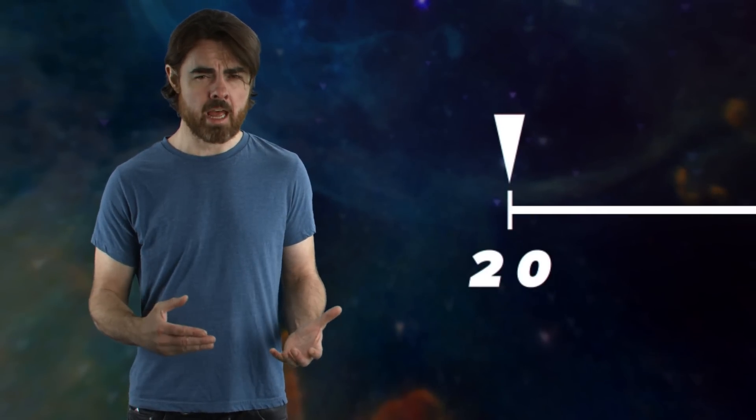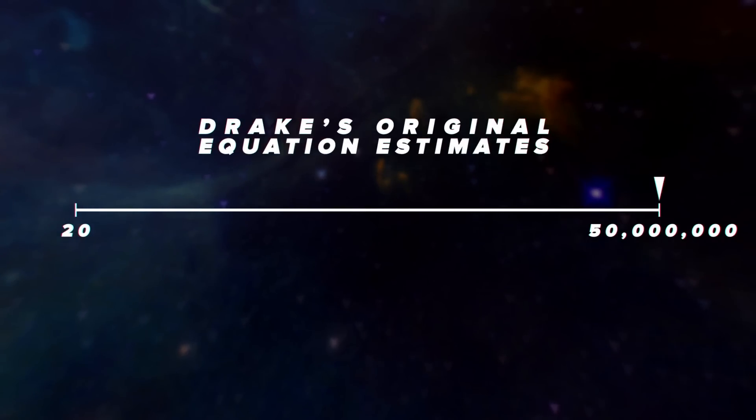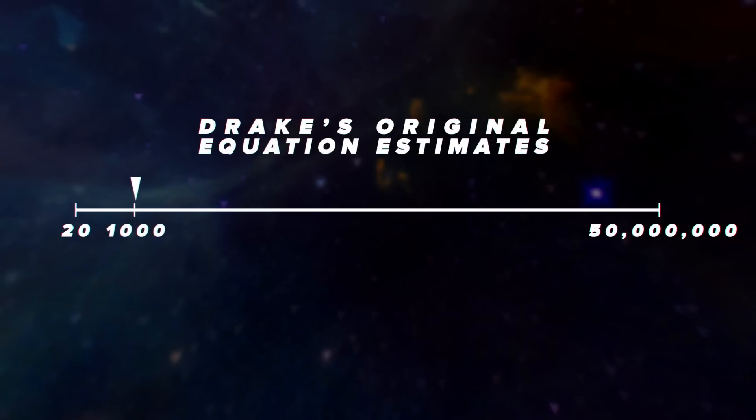Drake's original calculations gave a range from 20 to 50 million current technological civilizations in the Milky Way, although he felt there were probably at least 1,000. Still, that is a huge range.